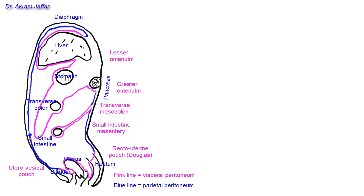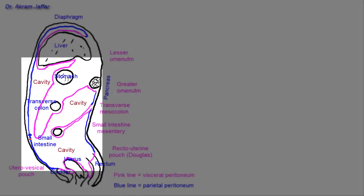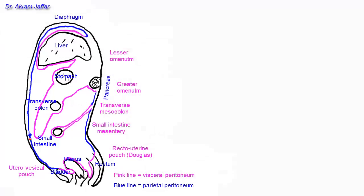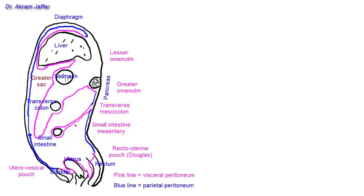The peritoneal cavity is a continuous cavity from the abdomen into the pelvis, located between the visceral and parietal layers of peritoneum. It is exaggerated in this diagram — otherwise it is a potential space where the two layers are opposed to each other. Where there is a double layer of peritoneum, as in the small intestine, it is called mesentery; sometimes it's called a ligament; sometimes it's called an omentum, as in the lesser omentum and the greater omentum.